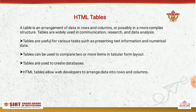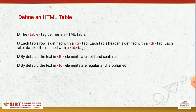HTML tables allow web developers to arrange data into rows and columns. The table tag defines an HTML table. Each row is defined with a tr tag, each table header is defined with a th tag, and each table data cell is defined with a td tag. By default, text in th elements is bold, while text in td elements is regular and left-aligned.